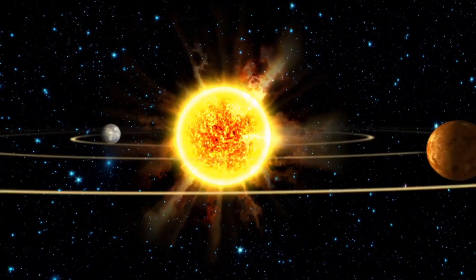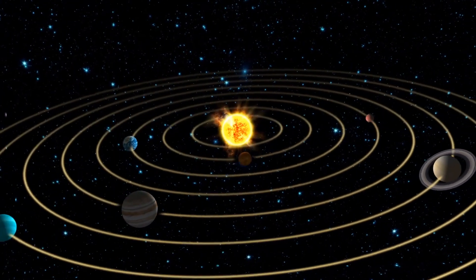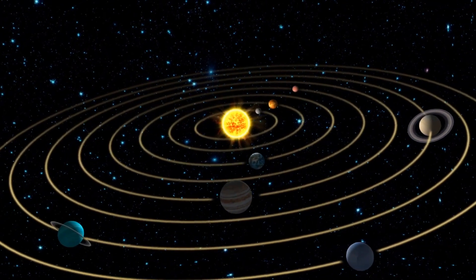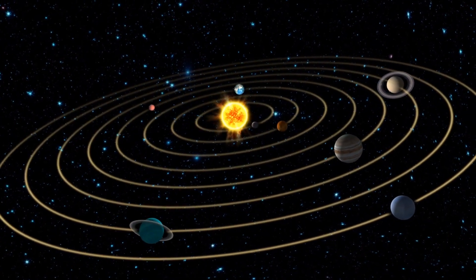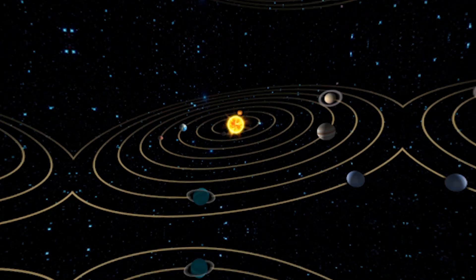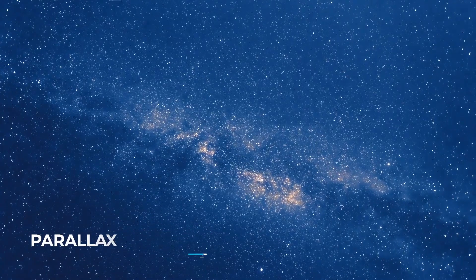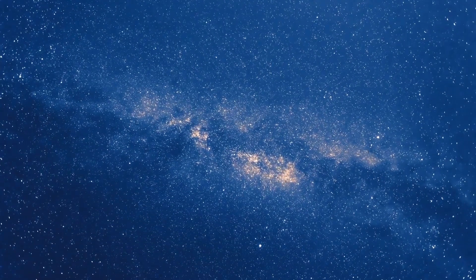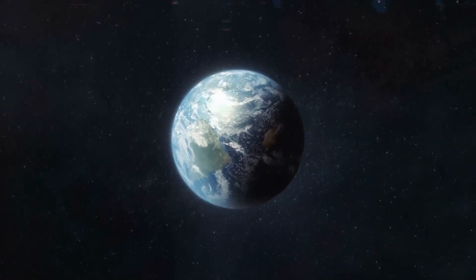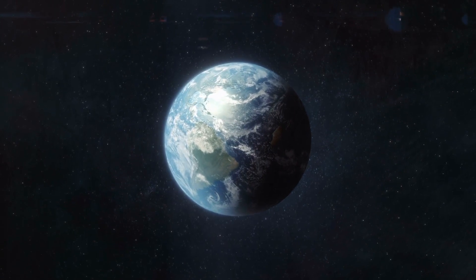The geocentric model had seemingly logical evidence. First of all, if the Earth were moving, then wouldn't we feel it, or feel a strong wind in the direction of movement? Also, if the Earth really moved around the sun, wouldn't we see the stars move? This last phenomenon, called parallax, is a real thing, but is much too small to be seen without a telescope due to the extreme distance to stars. At this point, the Earth was thought to be — and believed to be — the center of the universe.